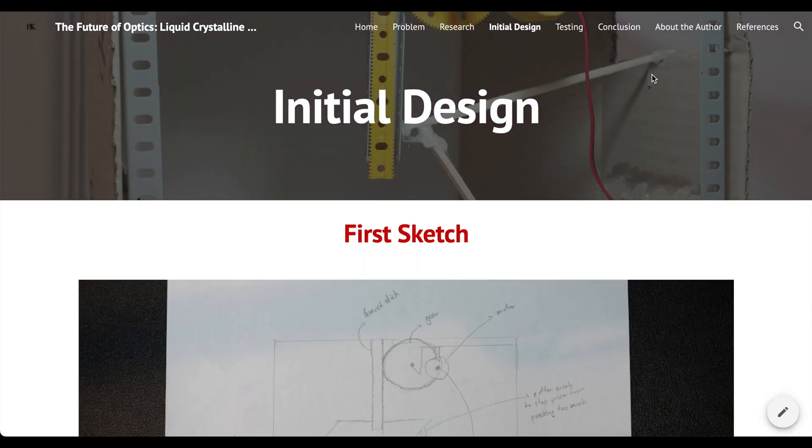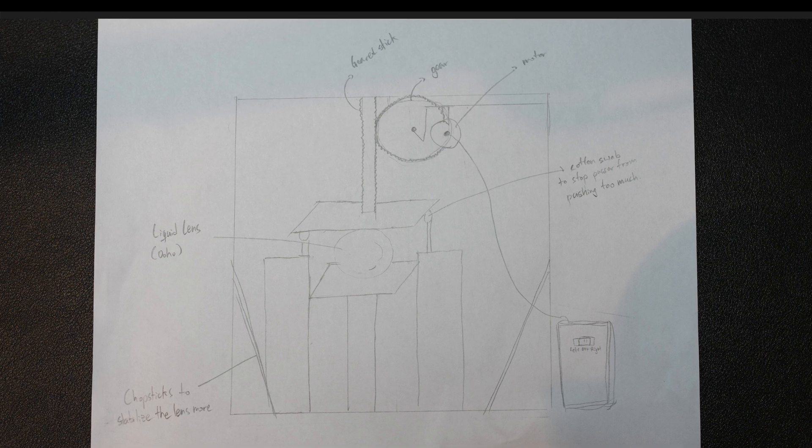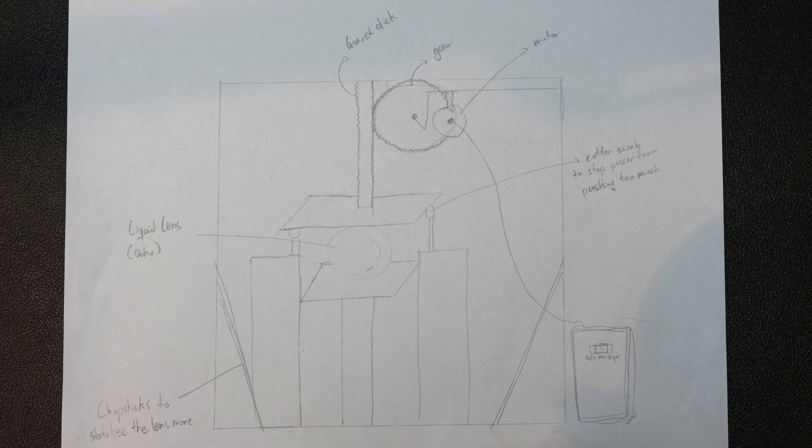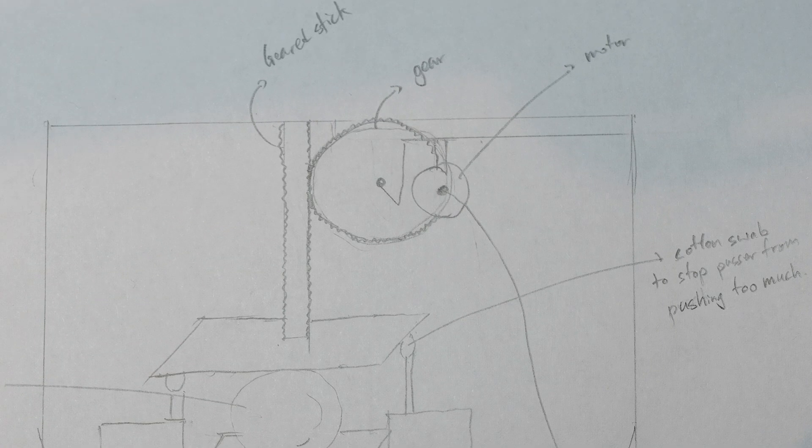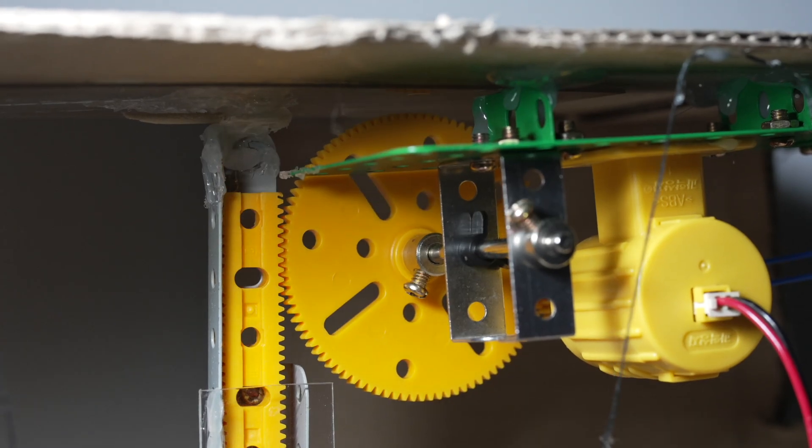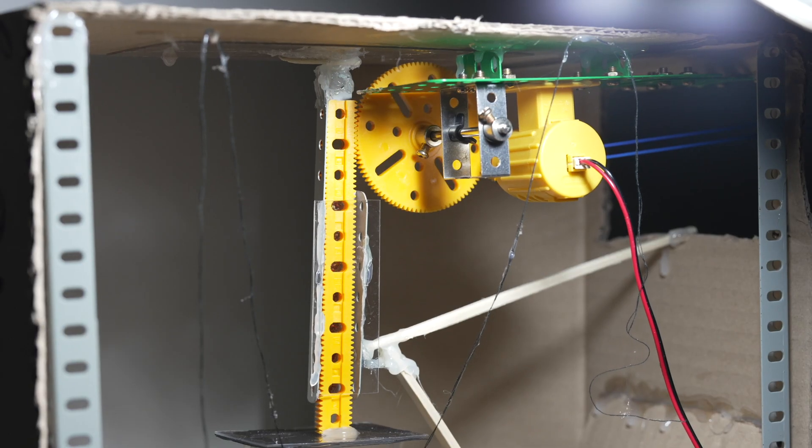Now, moving on to the first sketch. Here, you can see the whole lens barrel, which is made up of cardboard. Inside it are the lens, the pressing mechanism, and other structures that help make the overall structure more robust. The pressing mechanism above consists of a motor and a gear wheel and a stick with gears. This enables the stick to move up and down as the motor and the wheel rotates.